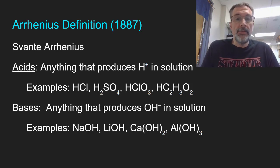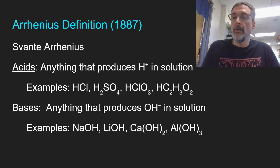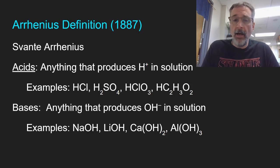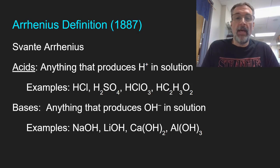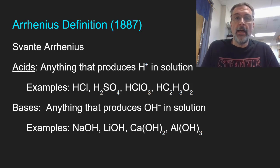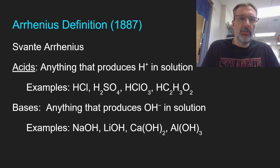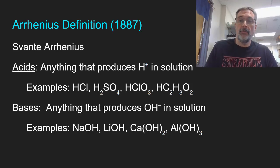According to Arrhenius, a base is anything that when you put it into water produces hydroxide ions. So sodium hydroxide, lithium hydroxide, calcium hydroxide, aluminum hydroxide — all of those, when dissolved in water, split into their ions and one of those ions is the hydroxide ion, making it a base. This definition is somewhat narrow because there are things that are bases that don't have hydroxide in them at all.